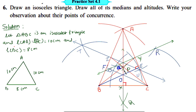Here you observe that the centroid G and the orthocenter O lie on the line which is the perpendicular bisector of the base BC. Segment AF is perpendicular to BC, and X is the midpoint of side BC. Therefore, segment AF is the perpendicular bisector. Hence, centroid G and orthocenter O both lie on the line which is the perpendicular bisector of the base BC. This is our required observation.